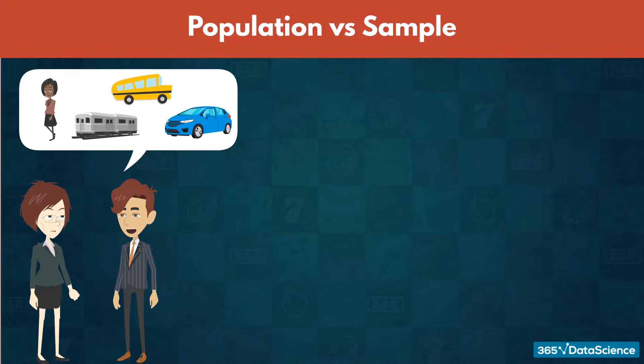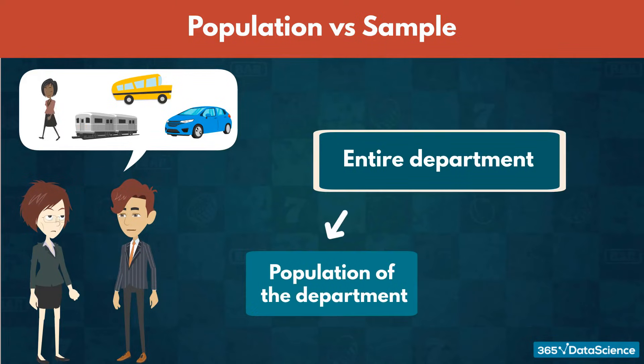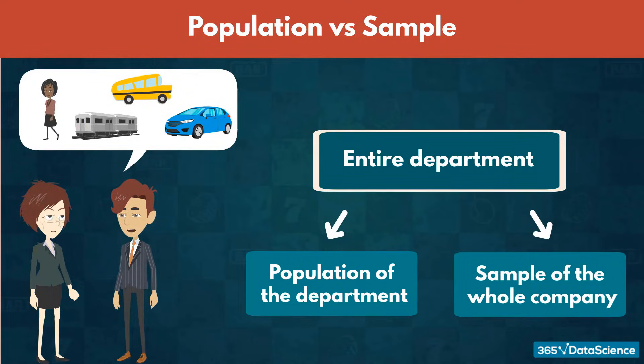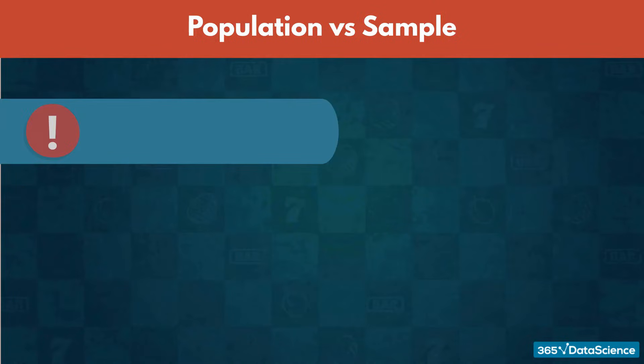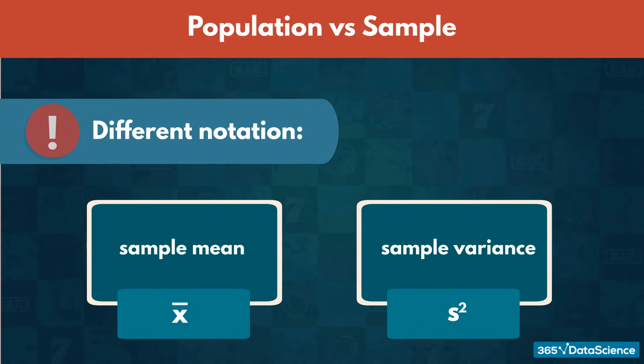For example, if an employer surveys an entire department about how they travel to work, the data would represent the population of the department. However, this same data would also just be a sample of the employees in the whole company. Something to remember when using sample data is that we adopt different notations for the mean and variance. We denote sample mean as X bar and sample variance as S squared.